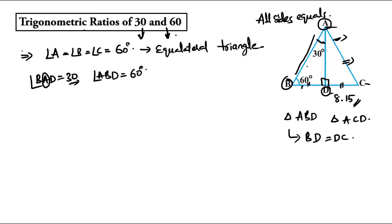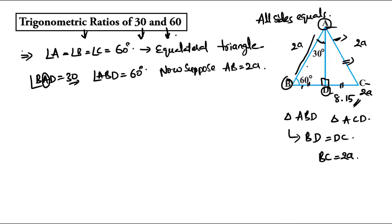We have to find the trigonometric ratios of 30 and 60. Suppose we take one side AB equal to 2a. Since all sides of the equilateral triangle are equal, all three sides become 2a. From this, BC is equal to 2a, and BD is equal to half of BC — that is, one half times 2a — so BD equals a, and DC also equals a.